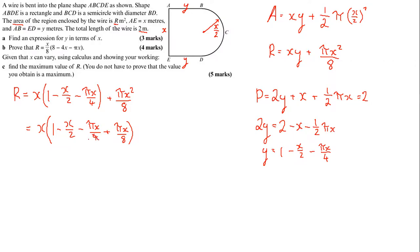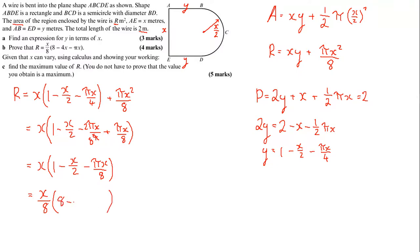Simplifying, you'll notice the pi x squared terms combine. We have x bracket (1 minus x over 2 minus pi x over 8). Factorizing out one eighth: R equals x over 8 times (8 minus 4x minus pi x). And that is exactly the expression for R we've been given in part b.